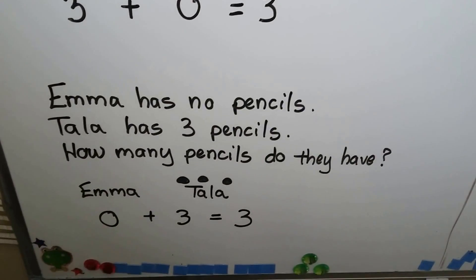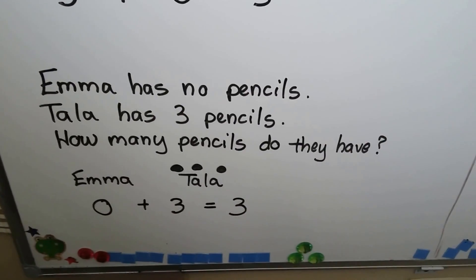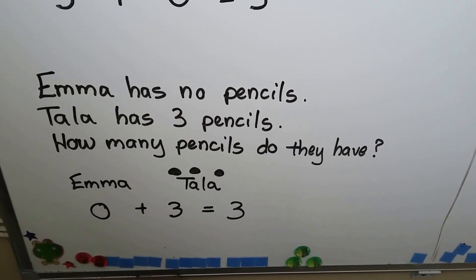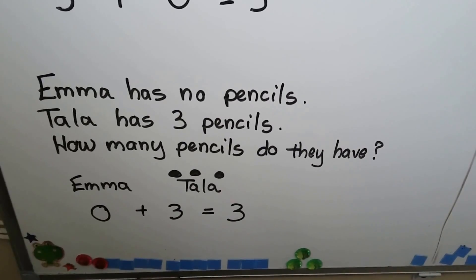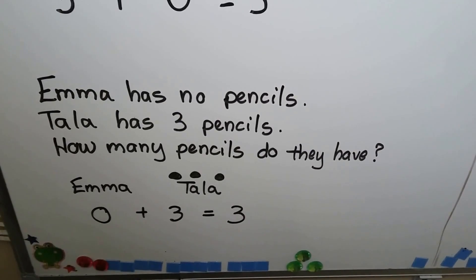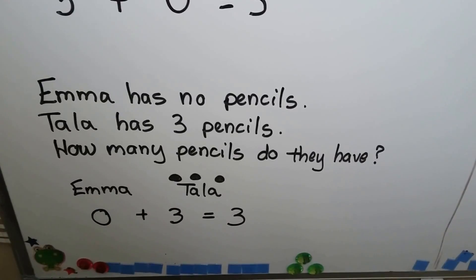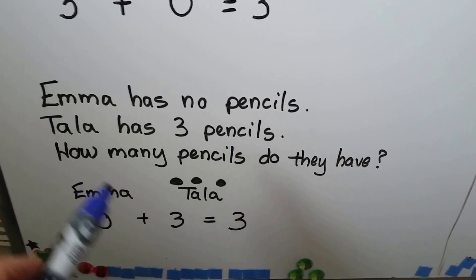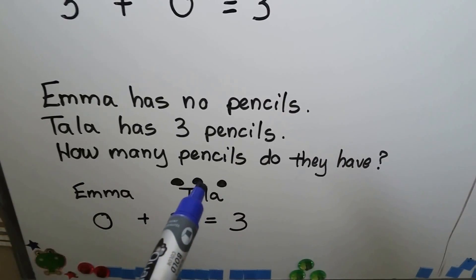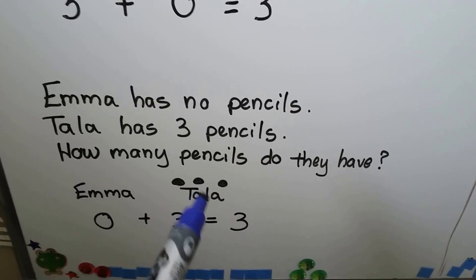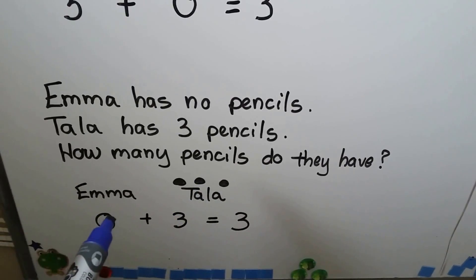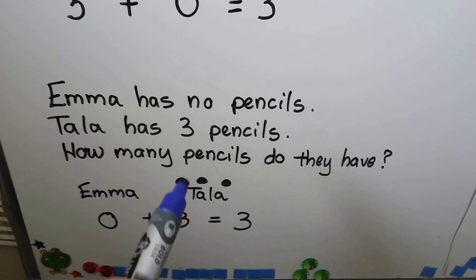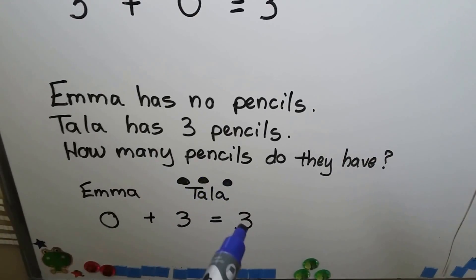Now Emma has no pencils and Tala has three pencils. How many pencils do they have? Now Emma has zero pencils and Tala has three pencils. Zero plus three is one, two, three.